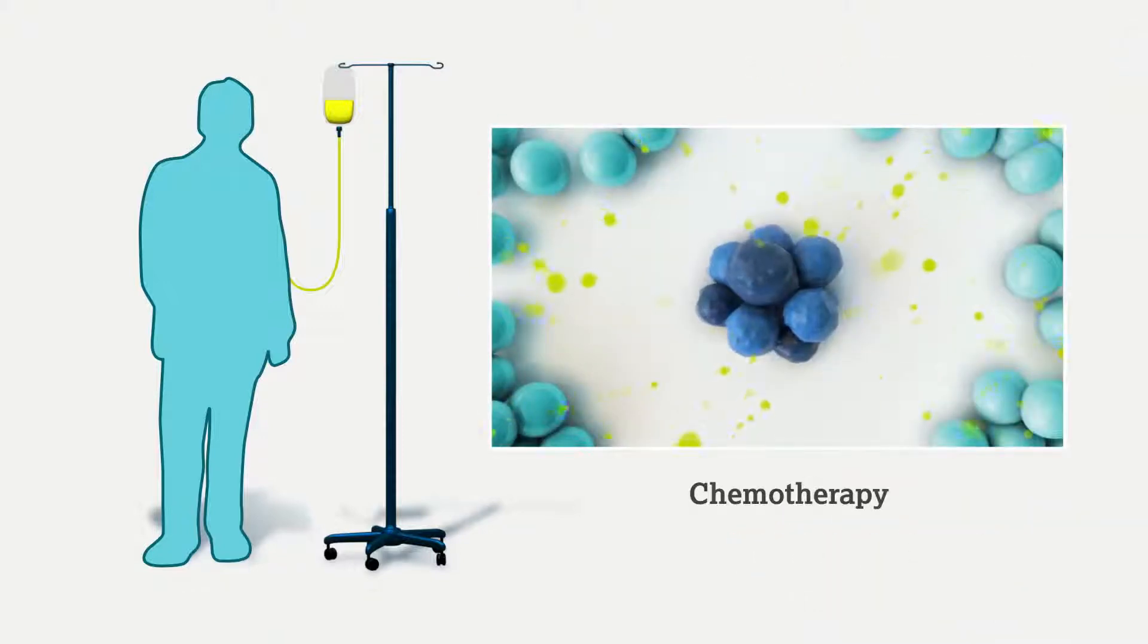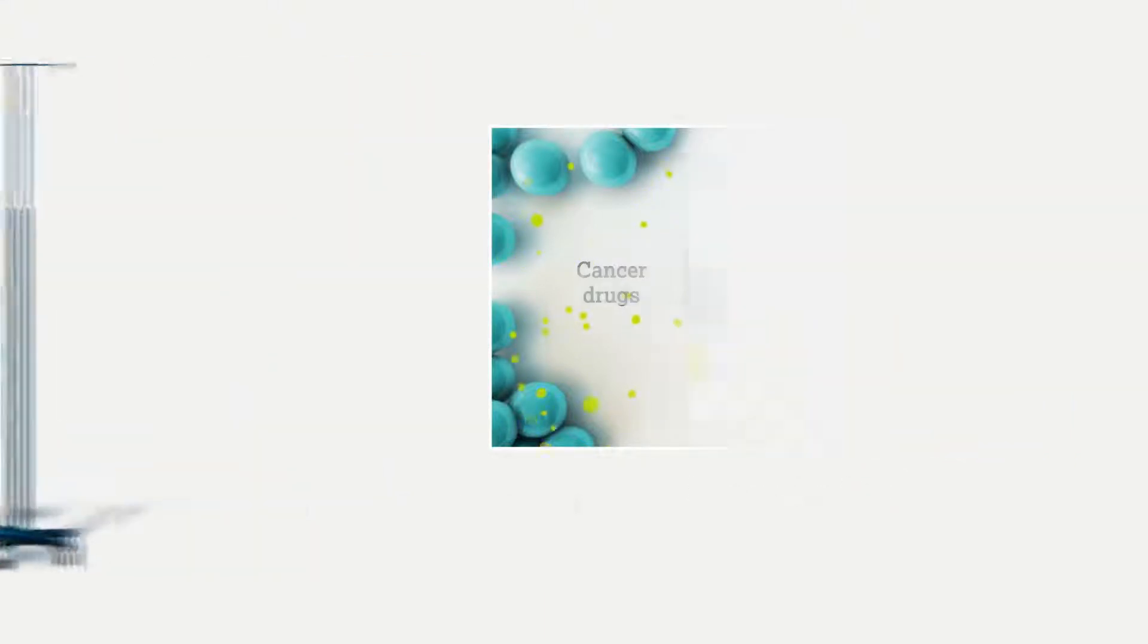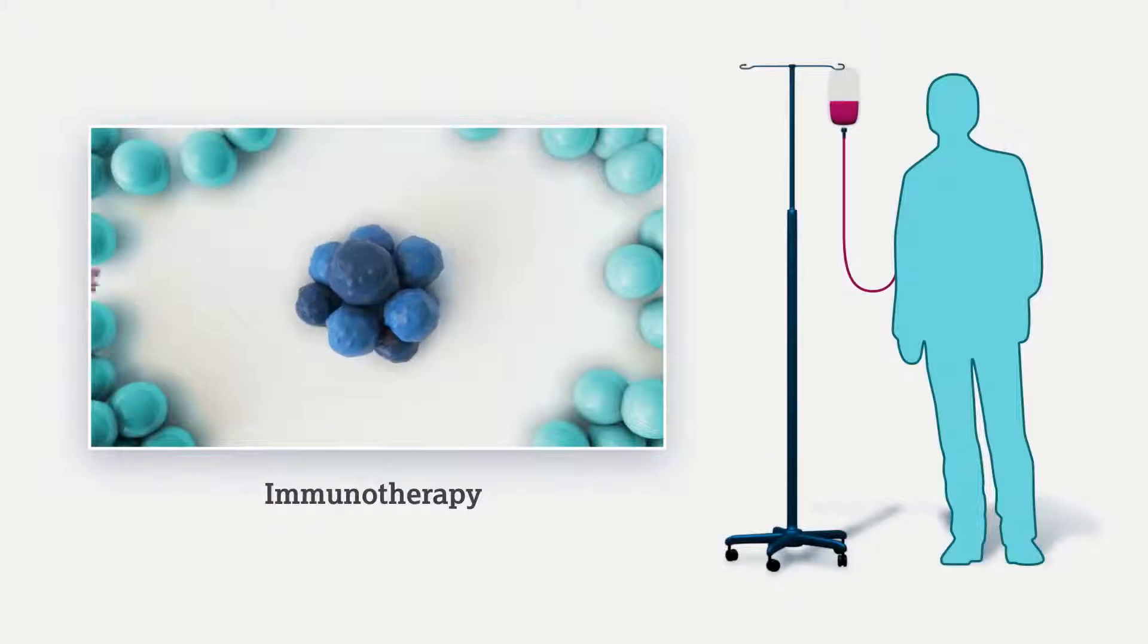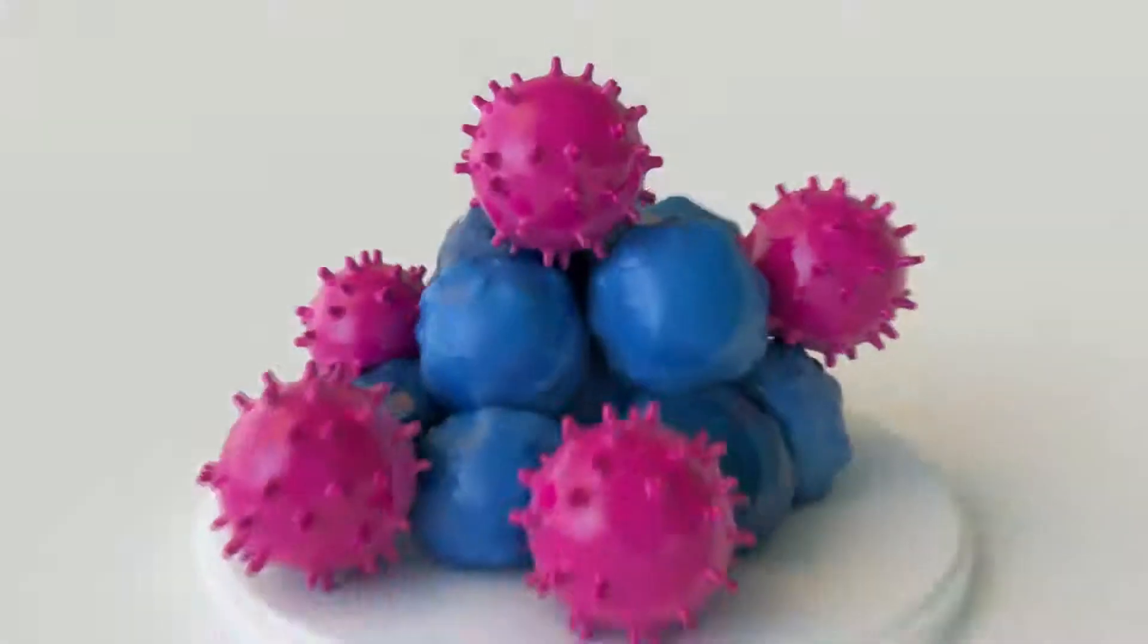Chemotherapy uses drugs that stop cancer cells from growing and making new cells. On the other hand, immunotherapy uses your body's own natural defenses to fight cancer cells. Let's find out how this works.